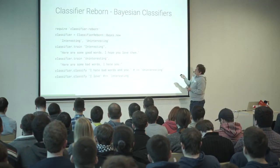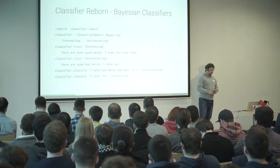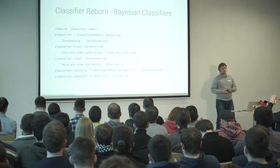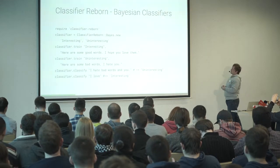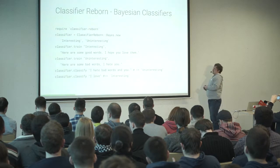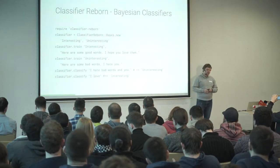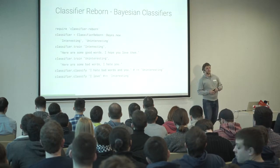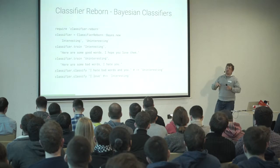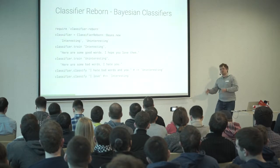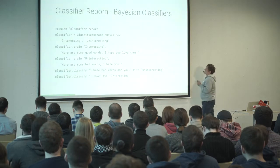This is the Bayes classifier — very simple, small memory footprint, very good speed performance. But it's not so flexible. For example, I can say 'I like movies with Bruce Willis and Sylvester Stallone,' but I cannot create a classifier to exclude films where they appear together. That's very hard to build with the Bayes classifier.